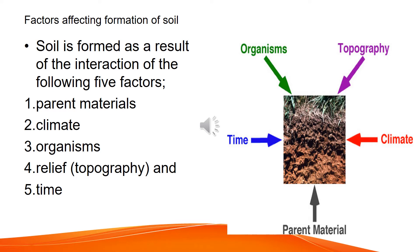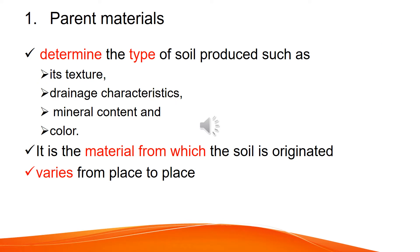The diagram of organisms, topography, climate, parent matter, and time are the five factors that affect the formation of soil. Parent material is a distinct type. Different types of soil are produced, such as differences in texture. With moisture, soil is very much affected by texture.